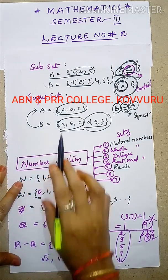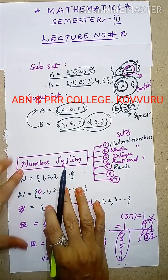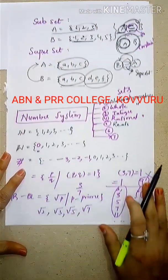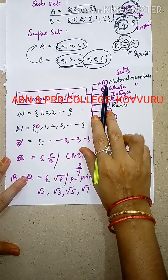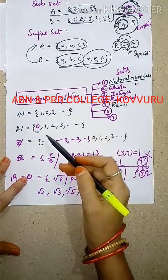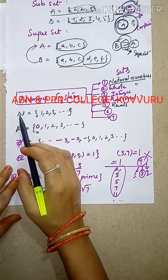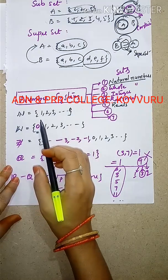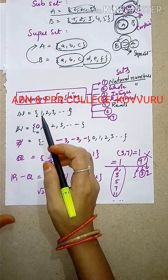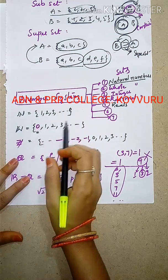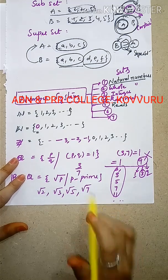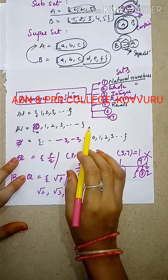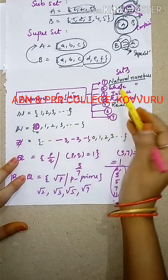Now let us look at the number system. First is the natural number system. The set of natural numbers consists of countable numbers: 1, 2, 3, and so on. These are the countable elements forming the set of natural numbers. Next is the set of whole numbers.